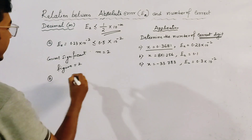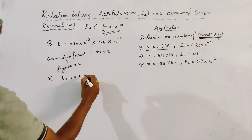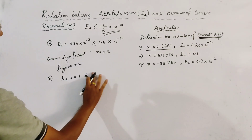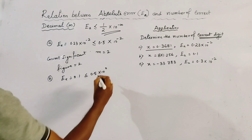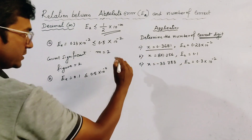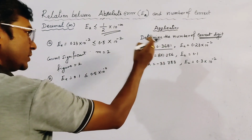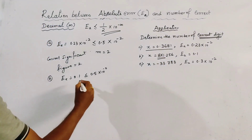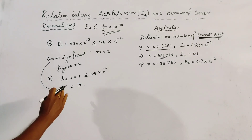For case (b), ea = 0.1, which can be written as less than or equal to 0.5 × 10^(0). So m = 0, meaning this number is correct up to 0 decimal places. Before the decimal, there are 3 significant figures. Therefore, the number of correct significant figures is 3.